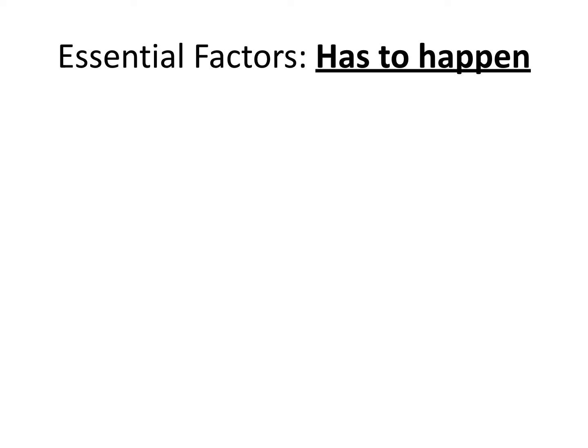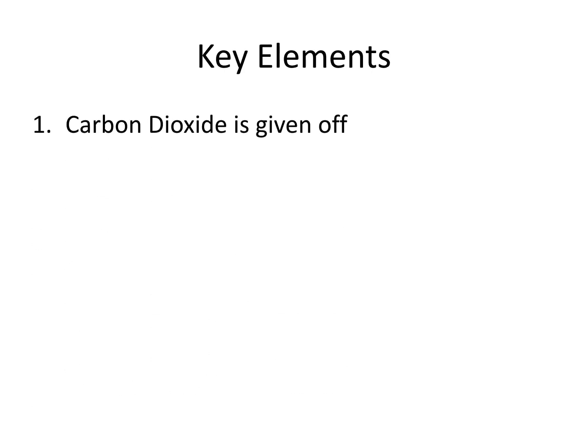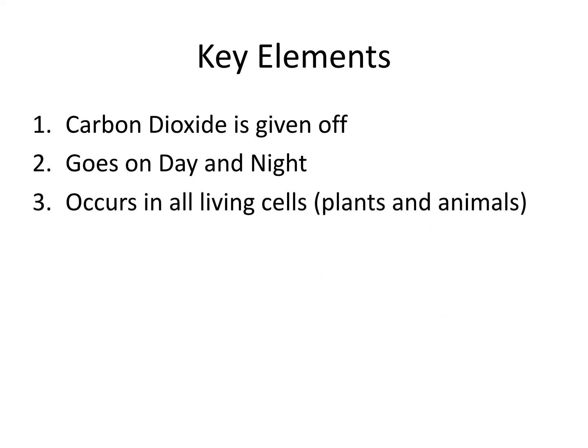Essential factors for cellular respiration — just like before, these have to happen; without these, it can't happen. The first one is glucose and the next one is oxygen, so a little bit simpler here — only two, not three. Key elements: carbon dioxide is given off, and we're thankful for that because it would be toxic to us if we did not. A dog, when he breathes out, is also breathing out carbon dioxide. This goes on night and day — it doesn't only happen when there's sunlight out. It occurs in all living cells — plants, animals, anything that's alive — with no exceptions. And food is broken down; that's an element we have to keep in mind.